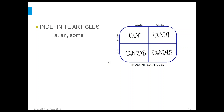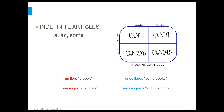We also have indefinite articles, which translate as 'a,' 'an,' or 'some.' The masculine singular is un, the feminine singular is una, the masculine plural is unos, and the feminine plural is unas. Using the same examples: un libro means 'a book,' unos libros means 'some books' — it's indefinite because we're not referring to a specific book. Una mujer means 'a woman,' and unas mujeres means 'some women.'